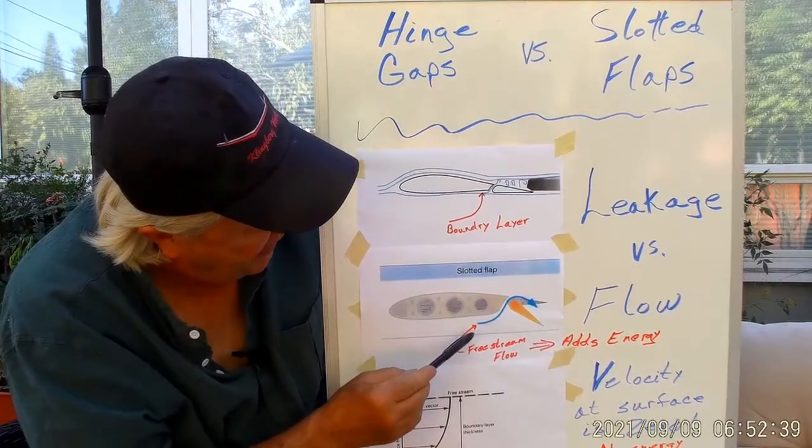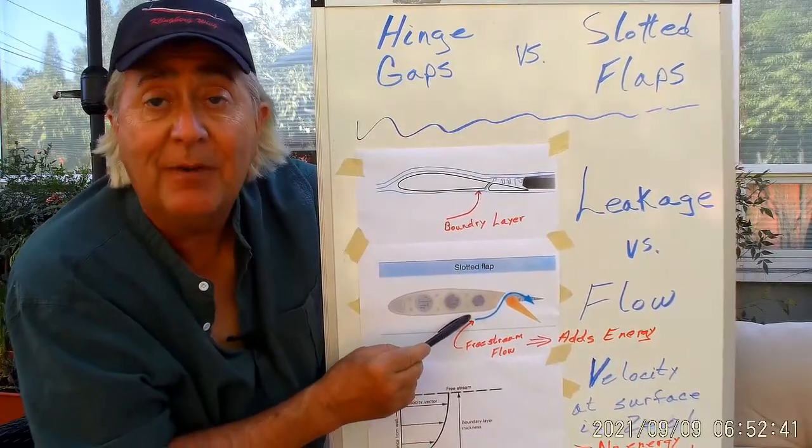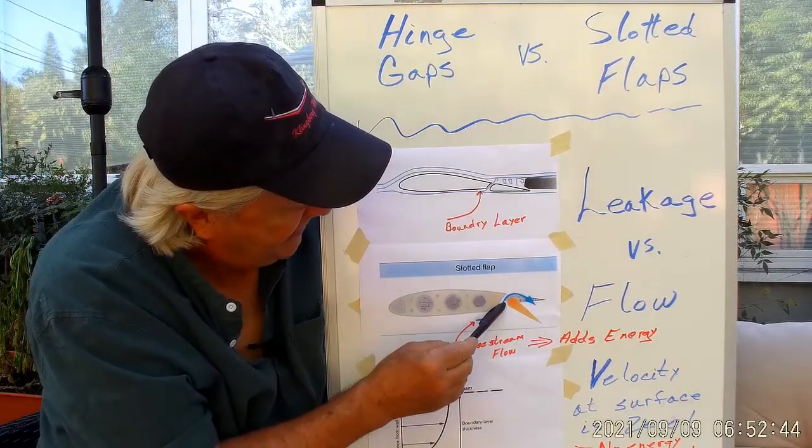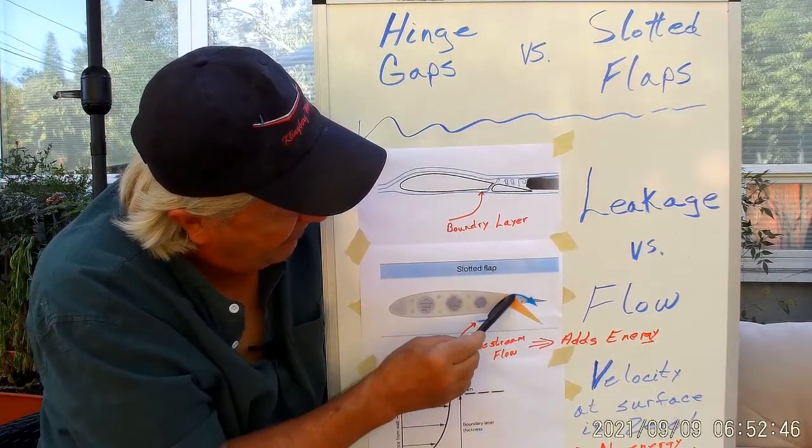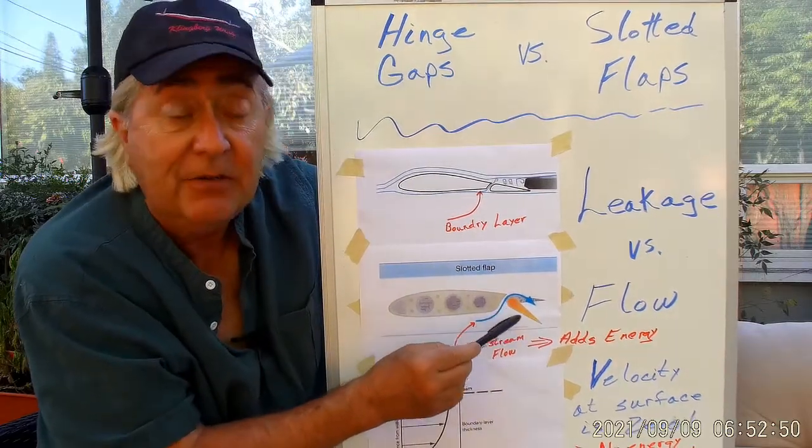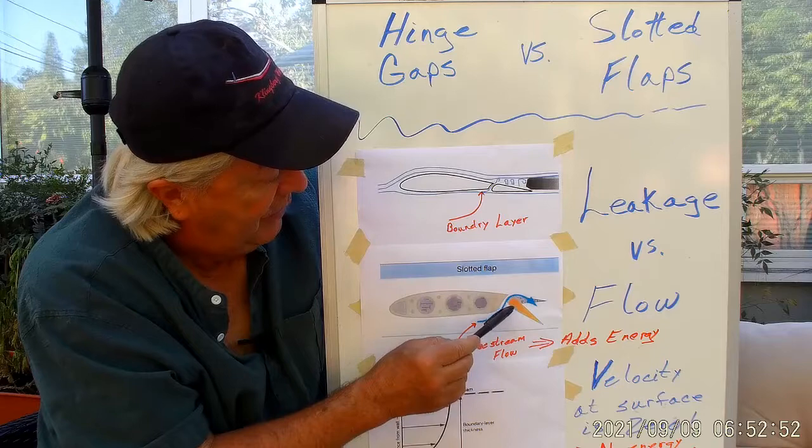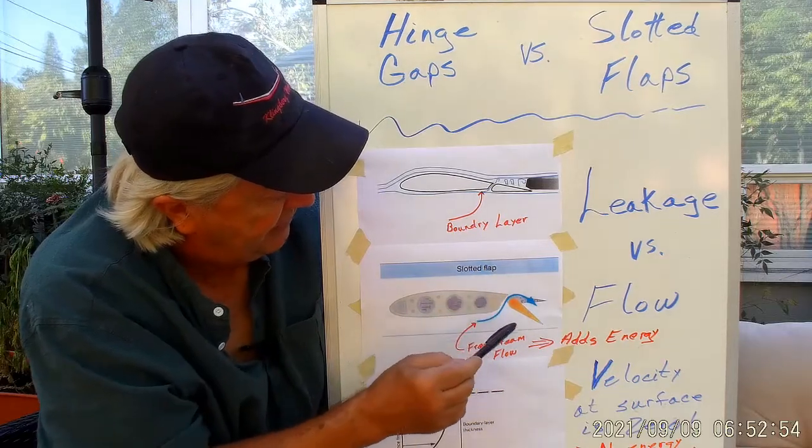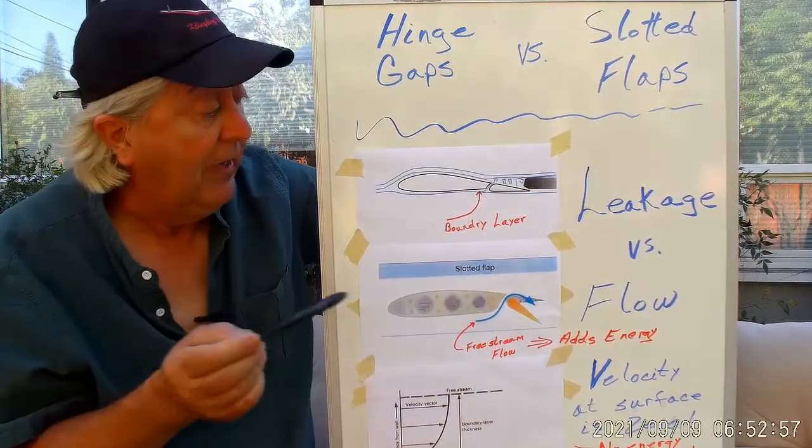And then people are asking, well, how is that different than slotted flap that you have down here? The flow comes in and it goes through the gap and over the control surface, in this case a flap, and actually increases the lift rather than causing the flow to be disturbed and separated. Good question.